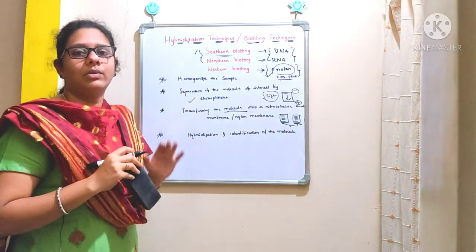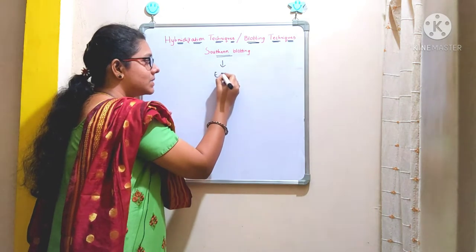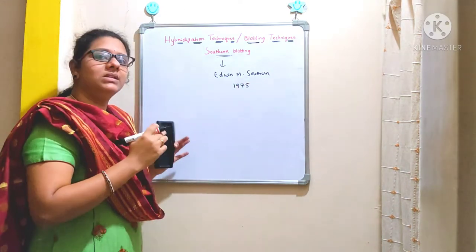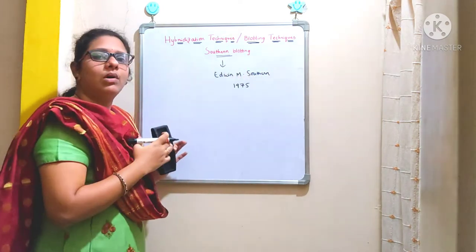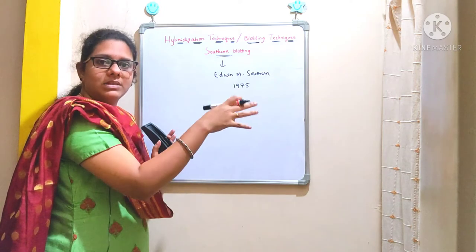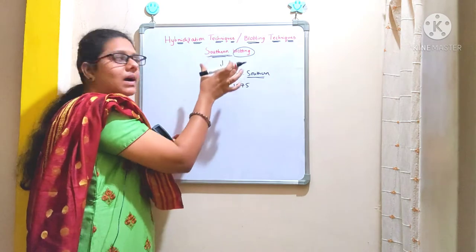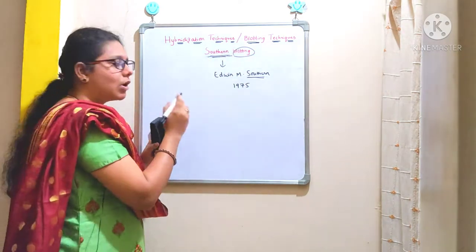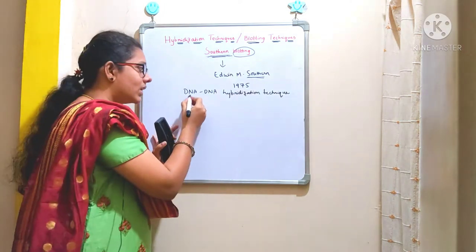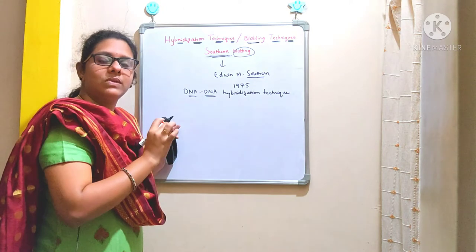Now let's discuss southern blotting in detail. This technique was developed by Edwin M. Southern in 1975, and is named after him. It involves transferring DNA from the gel to a nitrocellulose membrane. The other name for this technique is DNA-DNA hybridization technique, and with it we identify a specific DNA molecule.